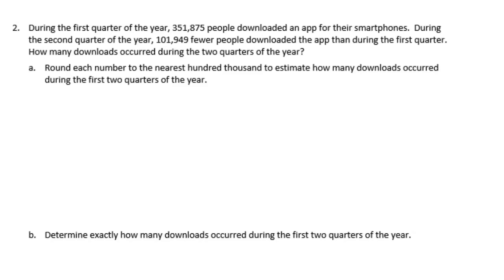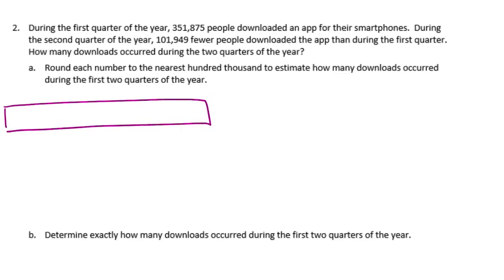Number two. During the first quarter of the year, 351,875 people downloaded an app for their smartphones. During the second quarter of the year, 101,949 fewer people downloaded the app than during the first quarter. How many downloads occurred during the first two quarters of the year? Round each number to the nearest 100,000 to estimate how many downloads occurred during the first two quarters.